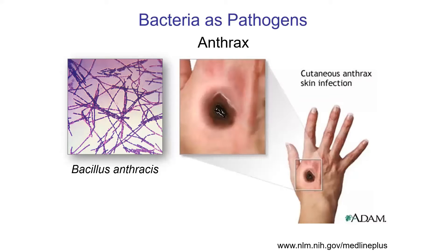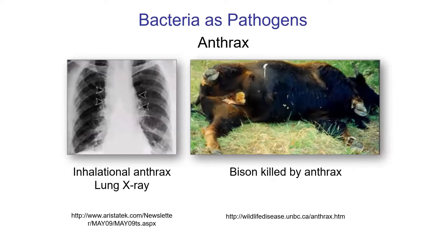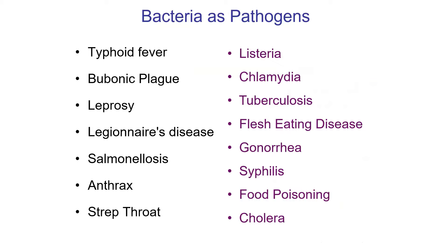We've talked about anthrax a few times. I mentioned it when we were talking about Robert Koch and the scientific method. Animals were dying of anthrax, and you can get anthrax in your lungs, which is really bad. Most humans who get anthrax are in contact with animals and get it in their skin, giving ugly skin infections. Anthrax is just one of many — bacteria are responsible for maybe around 80 to 85% of all infectious diseases. There are some pretty nasty ones, hopefully you haven't had most of them.